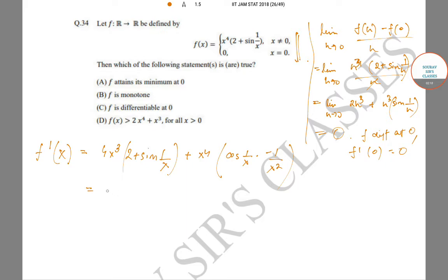This equals 4x^3(2 + sin(1/x)) - x^2 cos(1/x), which equals x^2[8x + 4x sin(1/x) - cos(1/x)].